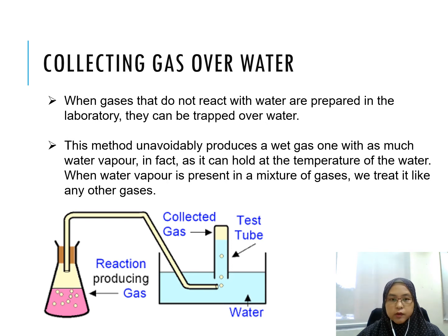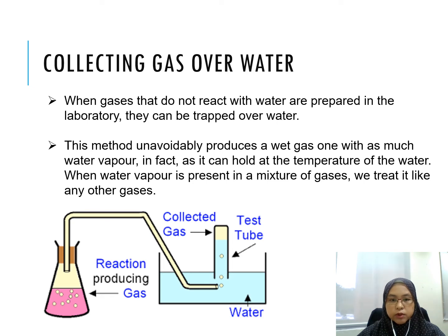Collecting gas over water: when gases that do not react with water are prepared in the laboratory, they can be trapped over water. This method unavoidably produces a wet gas — one with as much water vapor as it can hold at the temperature of the water. When water vapor is present in a mixture of gases, we treat it like any other gas.